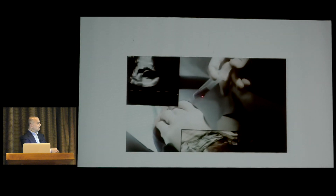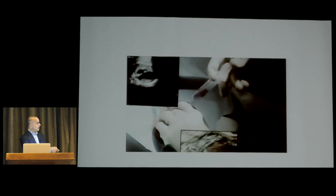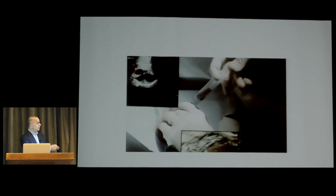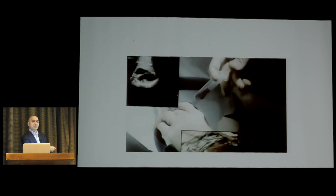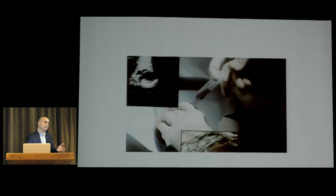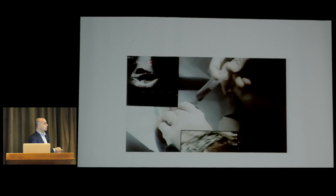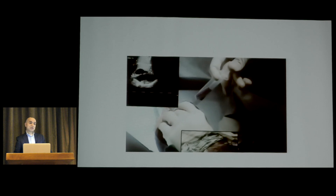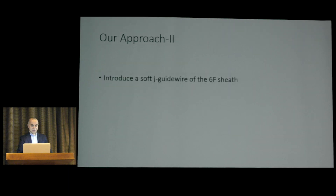Once you aspirate and the fluid appears bloody, inject agitated saline through the needle to confirm you are in the pericardial space and not in the RV, RA, or elsewhere. This is the critical step before proceeding further when blood is aspirated. If the fluid is not bloody, the bubble study is not absolutely necessary, though it is better to perform it.